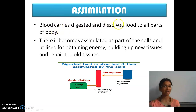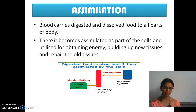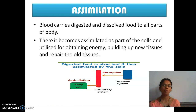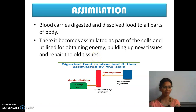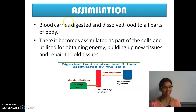Blood carries digested and dissolved food parts to all parts of our body through the circulatory system. What is in that circulatory system? We have blood. Is there any part of our body without blood? Blood is circulated from top to bottom through blood vessels. Those blood cells absorb the energies and it is circulated to all parts of the body cells.